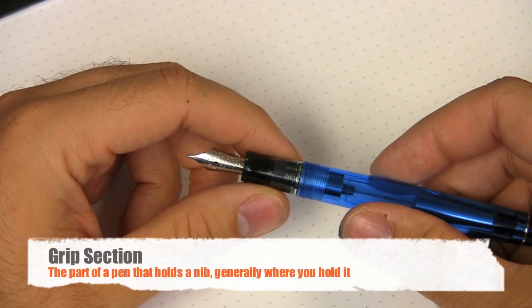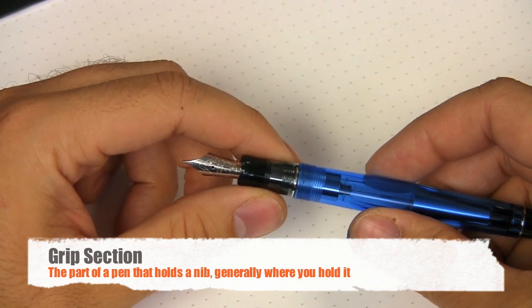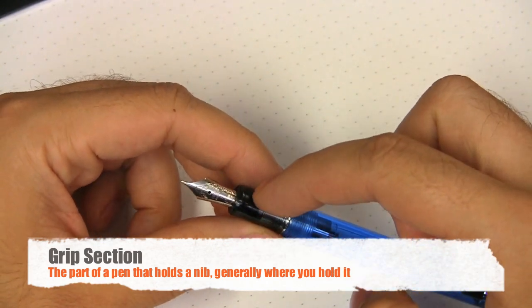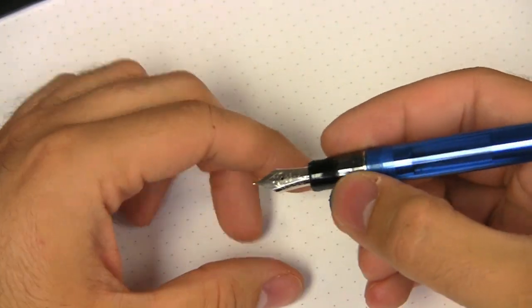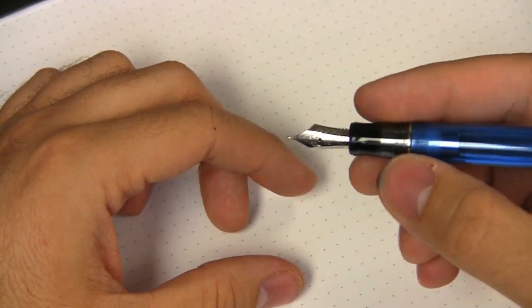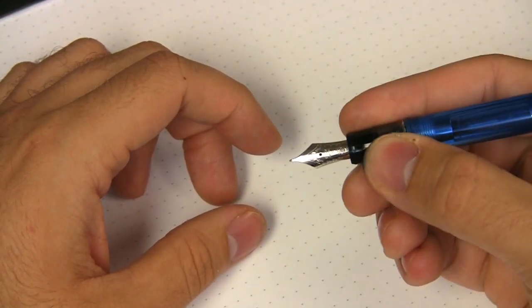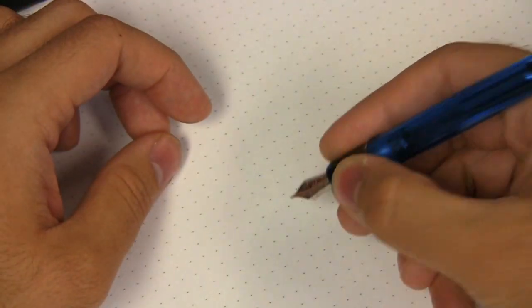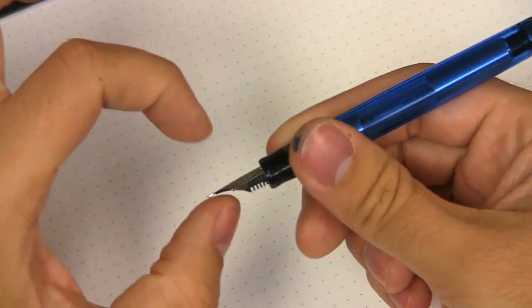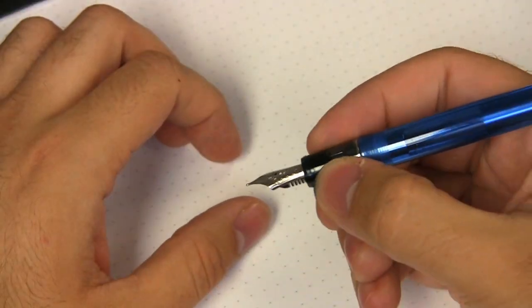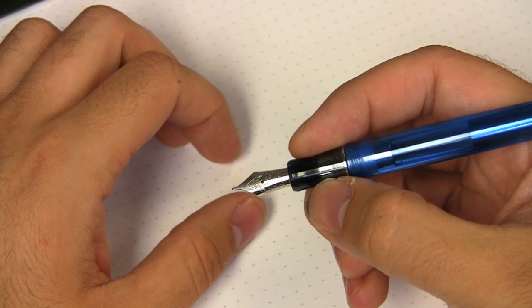The grip or the section, grip section I've heard it called, that's this part right here. That's where you're going to be holding your pen, unless you're holding it some kind of really obscure way. That's generally where you're going to be holding your fountain pen while you're doing your writing. So it's what houses the nib in the feed and it mates up to the body. It's that intermediary part that's called the section.